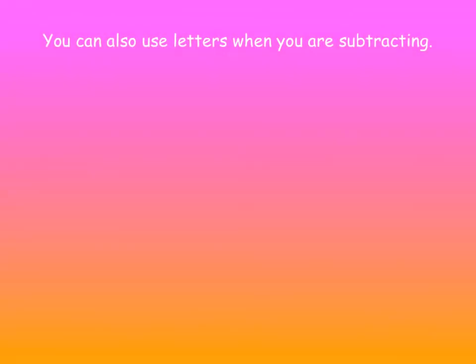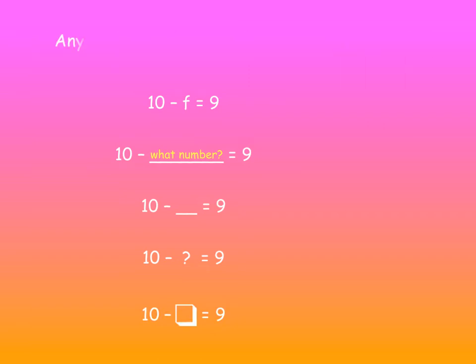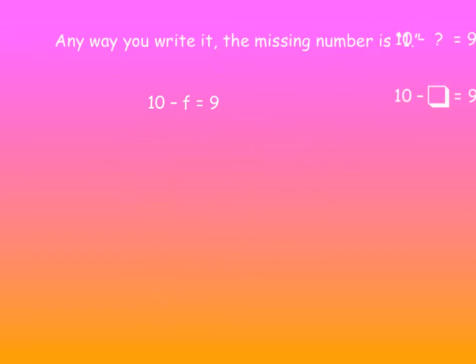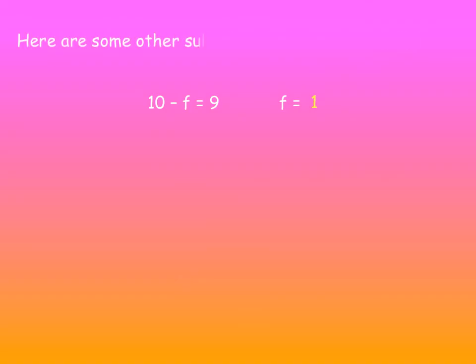You can also use letters when you're subtracting. 10 minus F equals 9. Well we could have written it as 10 minus what number equals 9, or 10 minus blank, 10 minus question mark, 10 minus box. Any way you write it the missing number is 1. So F equals 1. Here's some other subtraction problems using letters. G must be, what do you think? 10 minus G equals 9? It's got to be 9.